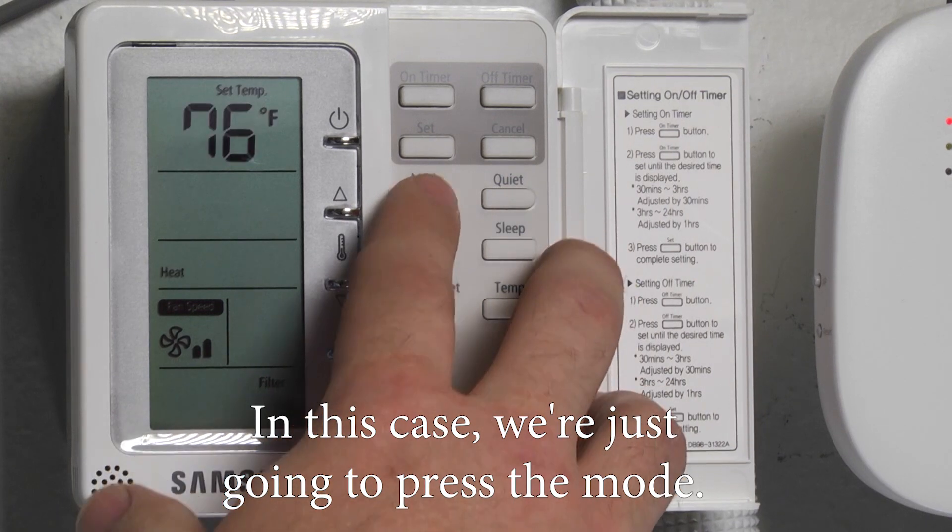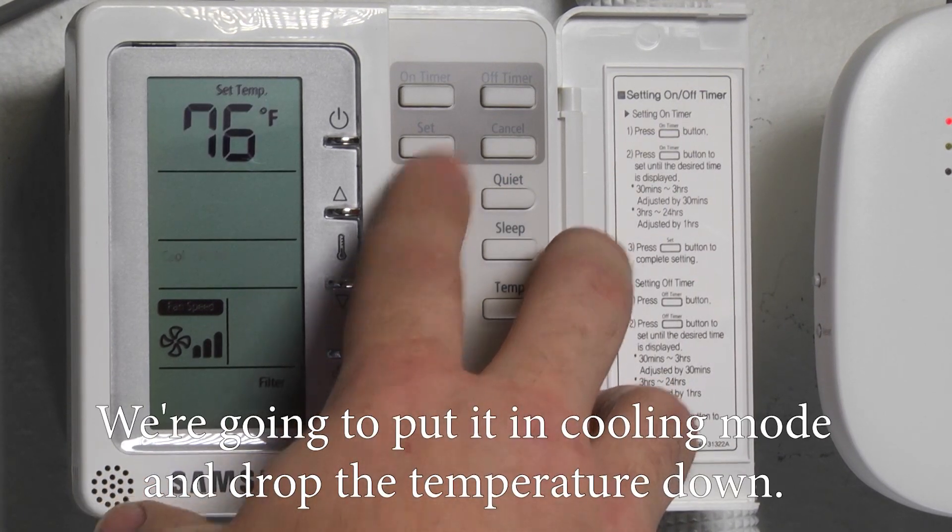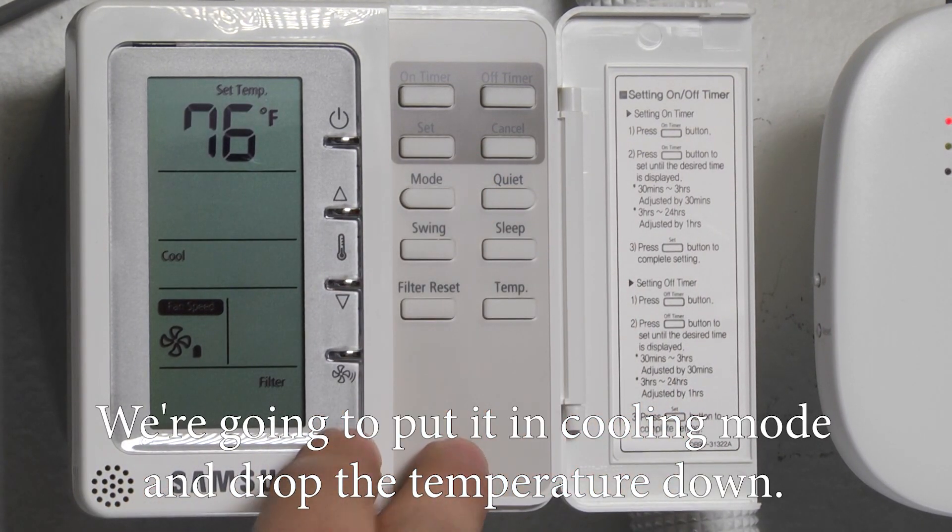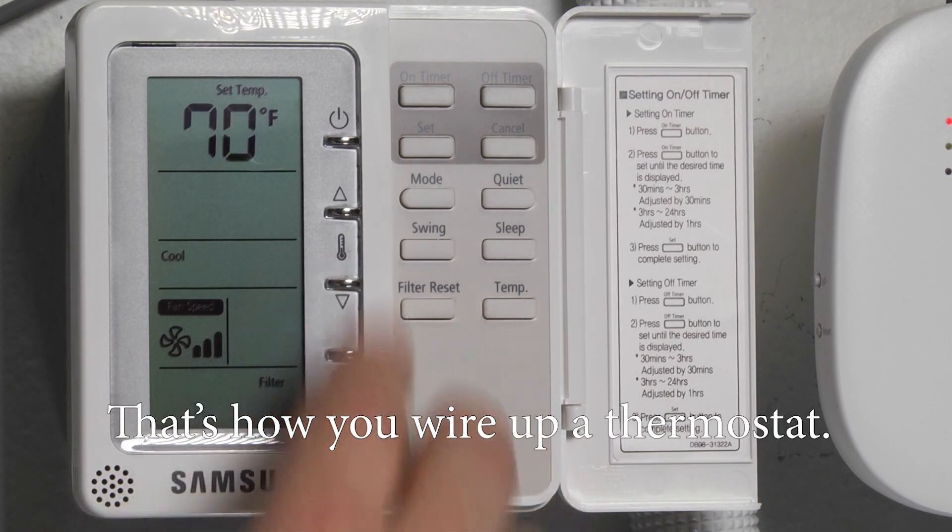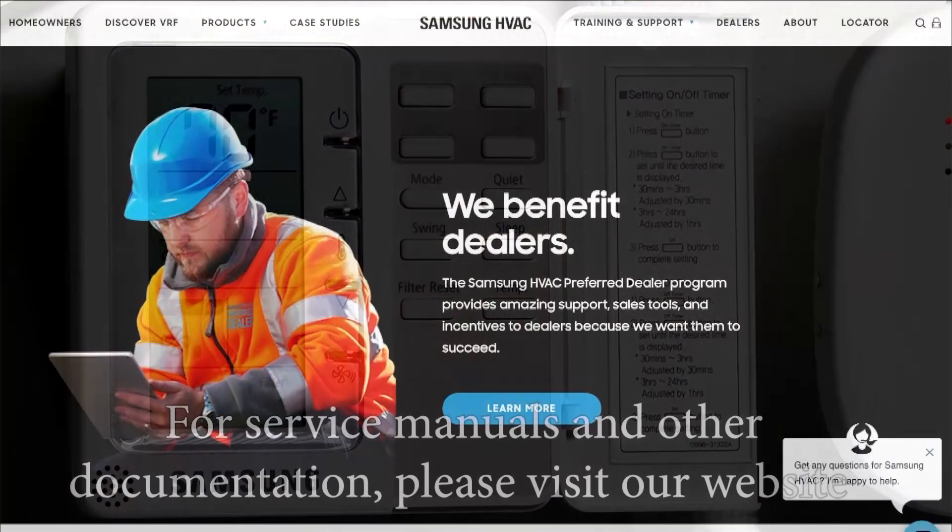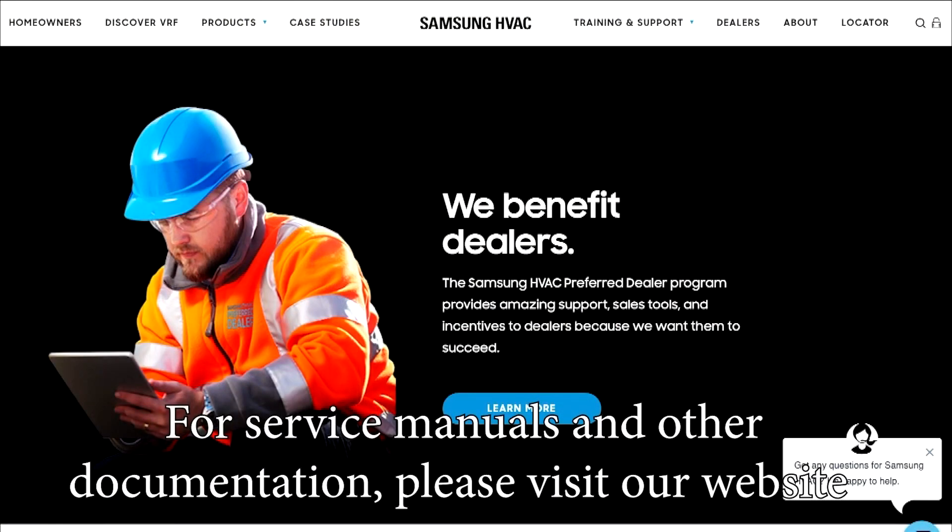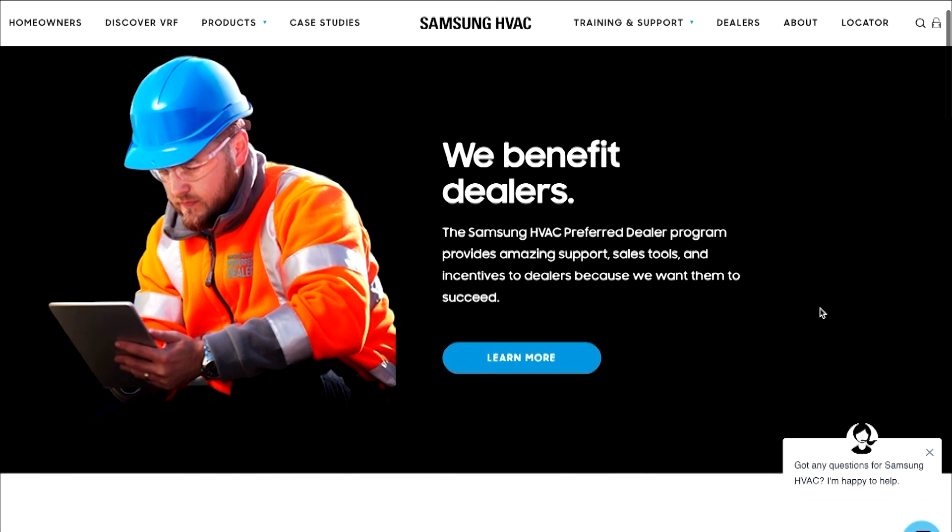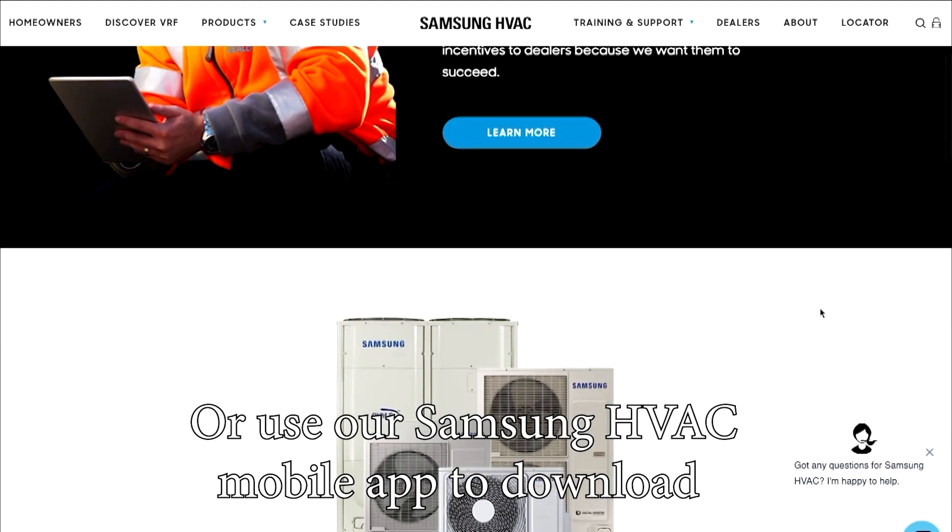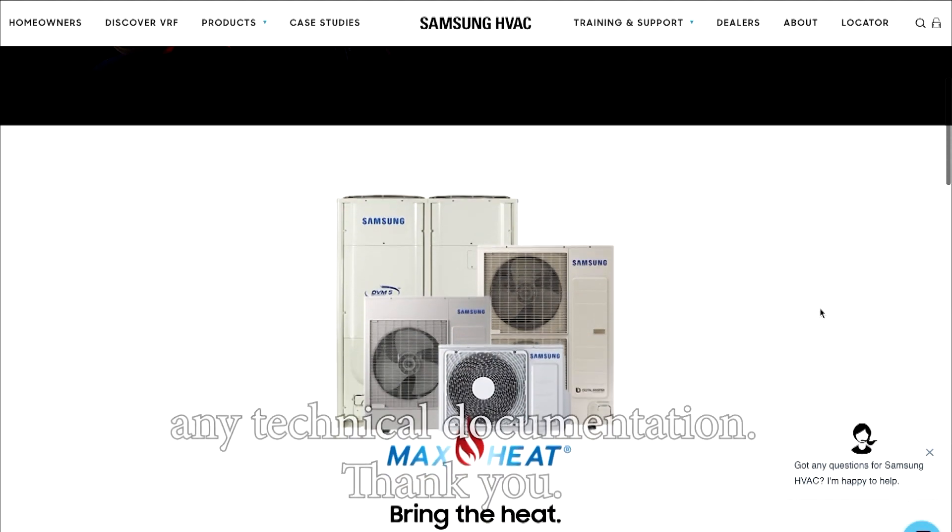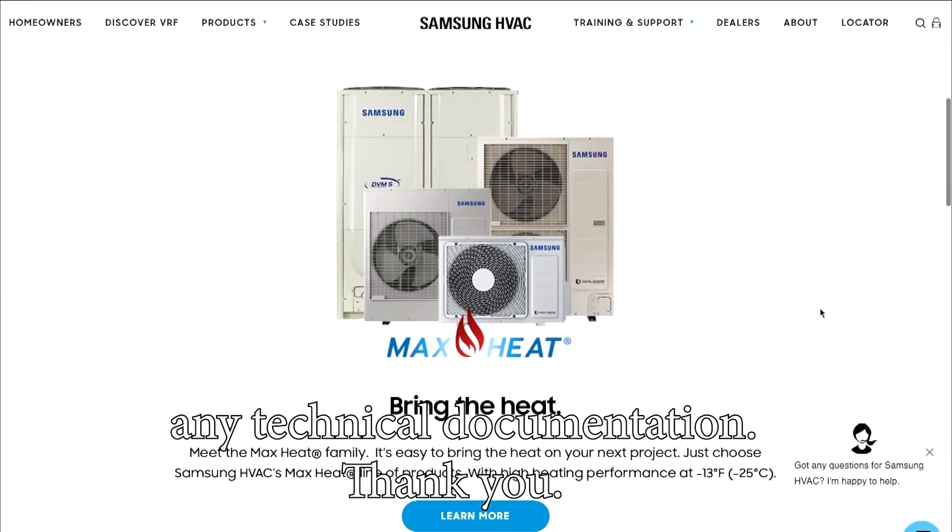In this case we're just going to press the mode. We're going to put it in cooling mode. And drop the temperature down. That's how you wire up a thermostat. For service manuals and other documentation please visit our website at SamsungHVAC.com or use our Samsung HVAC mobile app to download any technical documentation. Thank you.